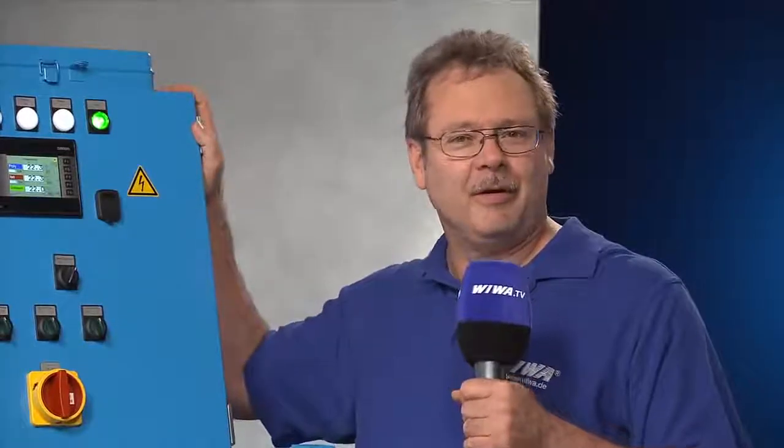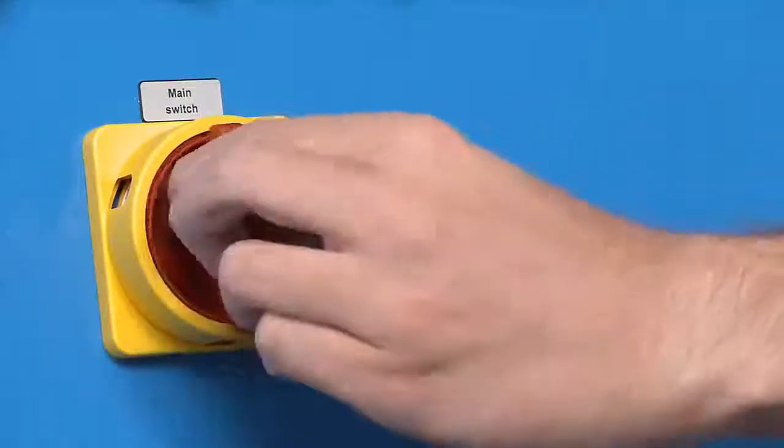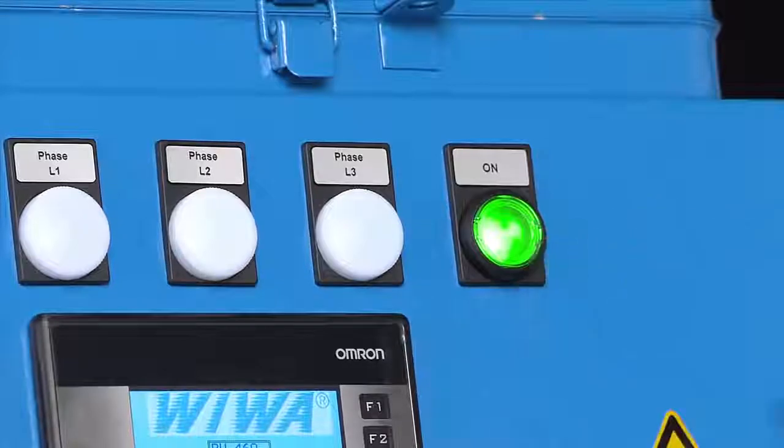Now we must consider a very important step. All fluid hoses and the proportioner must be filled with the components you intend to apply. Set the system's master switch to ON. When using a three-phase system, check whether control lamps L1 to L3 are lit up. These control lamps indicate whether all three phases of the power supply are available. If they are not, check the available power supply. Switch the system on by pressing the green button.